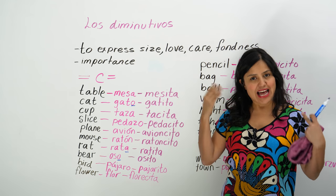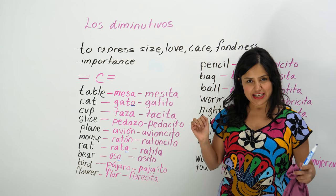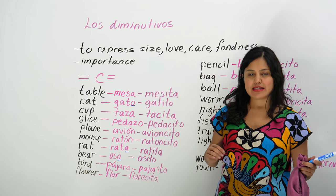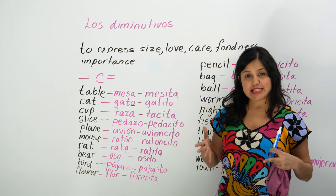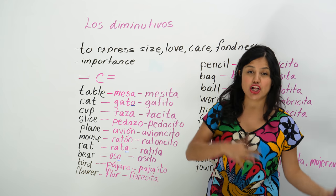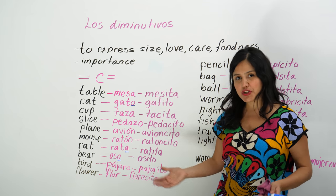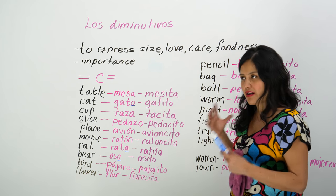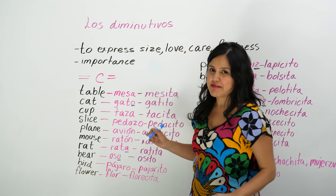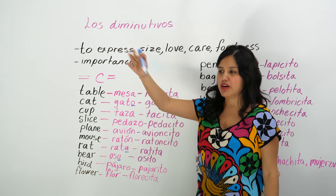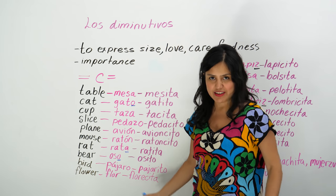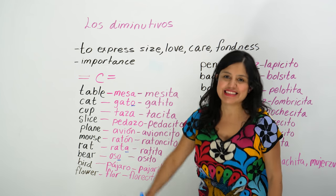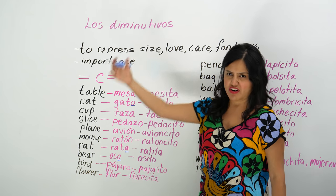I've heard that in Spain, because they speak louder than in Latin America, they don't use diminutivos as often as Mexicans do. Apparently Mexicans use diminutivos a lot — I don't know if it's completely true, but I've heard that from professors who know a lot about this topic. Maybe because they speak louder, they have to be a bit more direct instead of saying 'ay, pásame la salecita.'